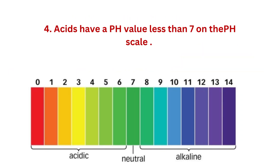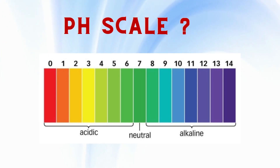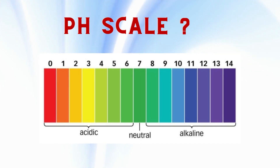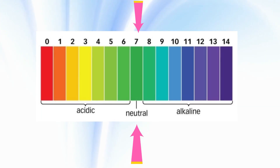Acids have a pH value less than 7 on the pH scale. The pH scale is used to measure the acidity or alkalinity of a substance.